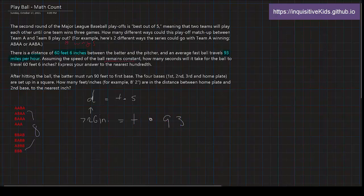Times 93 miles per hour. So now we have the equation: 726 inches equals the time times 93. So we're trying to find the time. Well, we just divide on both sides. 726 divided by 93, and then rounded to the nearest hundredth would be about 7.81. So the answer is 7.81 seconds.